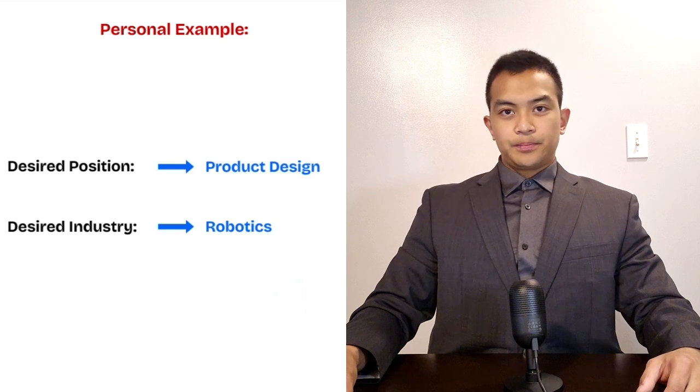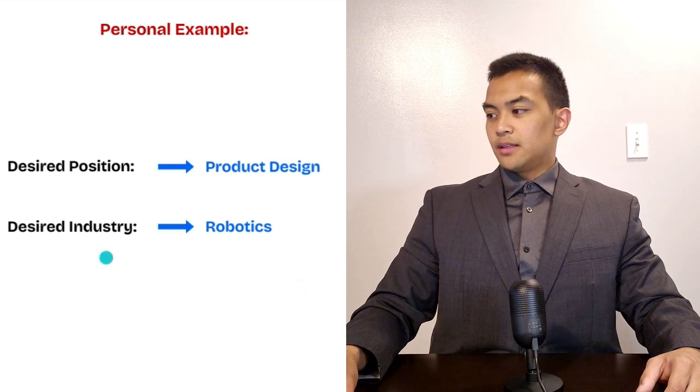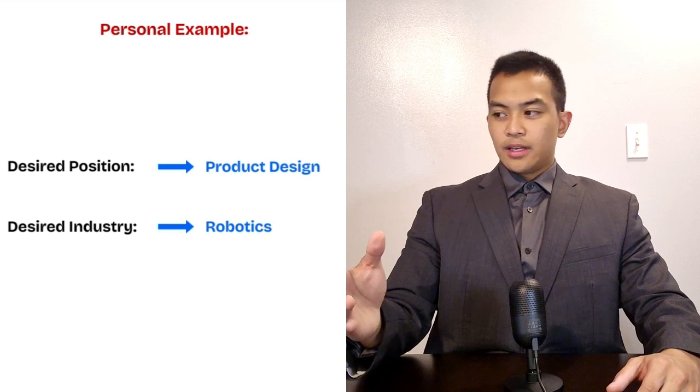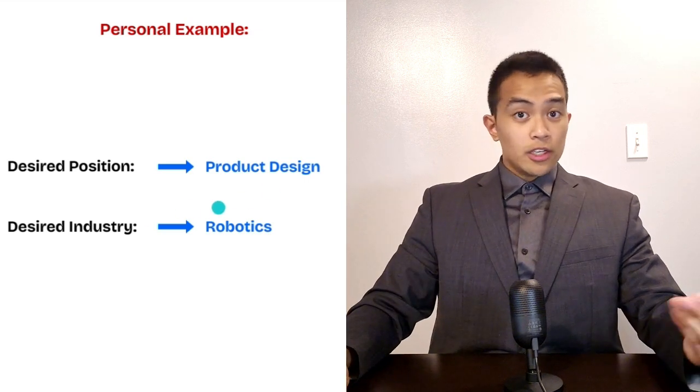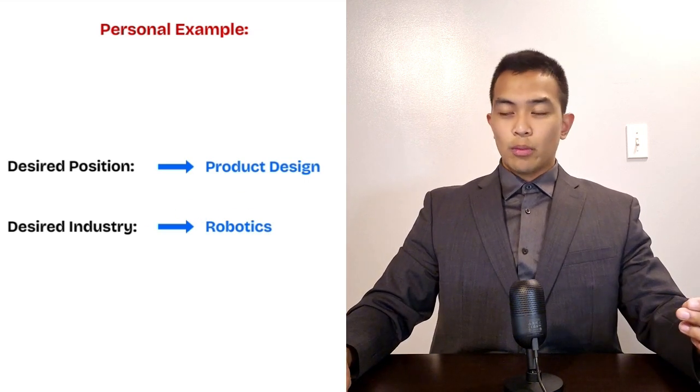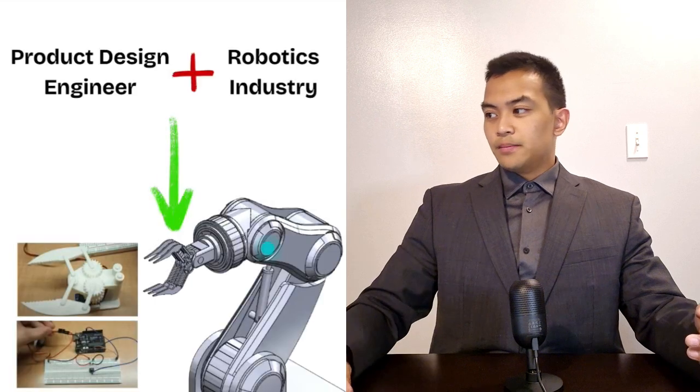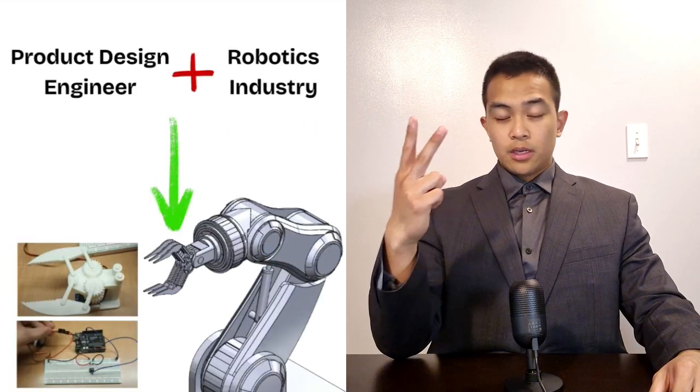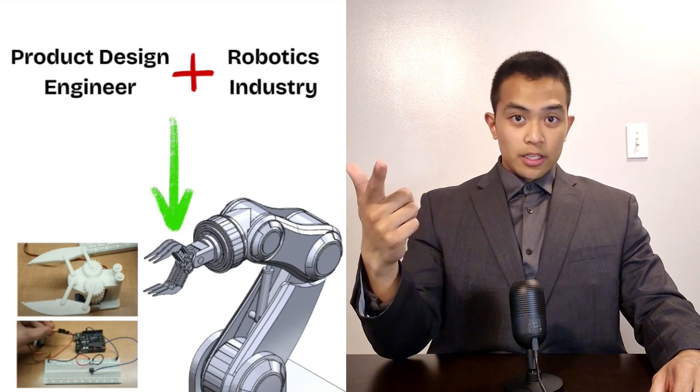For a personal example, let's look at my situation where I wanted to be a product design engineer. And one of my desired industries that I wanted to get into was robotics. So what do you think I did? I obviously made some projects that were based off of those two details: product design and robotics.